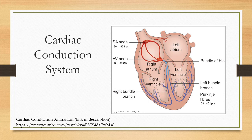If the SA node fails, the AV node will take over. If both the SA node and the AV node fail, then the Purkinje fibers will take over to generate a heartbeat.